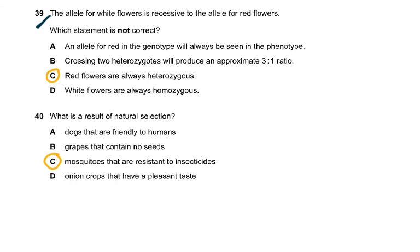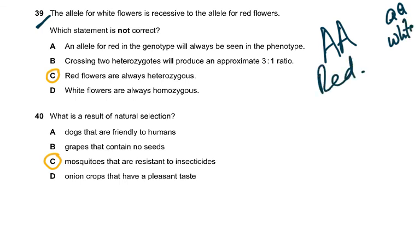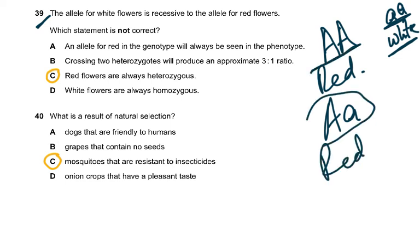Question 39: The allele for white flowers is recessive to the allele for red flowers — so red is dominant and white is recessive. White flowers must be homozygous recessive, and red flowers can be homozygous dominant or heterozygous. Which statement is NOT correct? 'Red flowers are always heterozygous' — that is wrong, because red flowers can be homozygous dominant. White flowers are always homozygous recessive (correct). Crossing two heterozygous plants produces a 3:1 ratio (correct). The allele for red in the genotype will always be seen in the phenotype because it is dominant (correct).